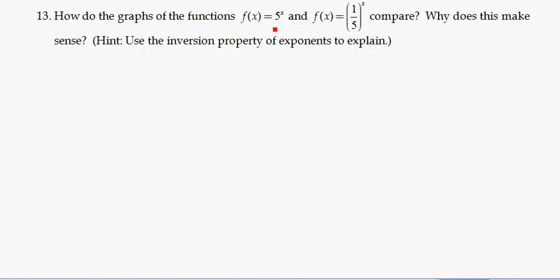We've already talked about the fact that a function like 5 to the x, that's a base being greater than 1, so that would be exponential growth. And we know that when the base is 1/5, that's a b value between 0 and 1, that would be exponential decay. So we already know that.